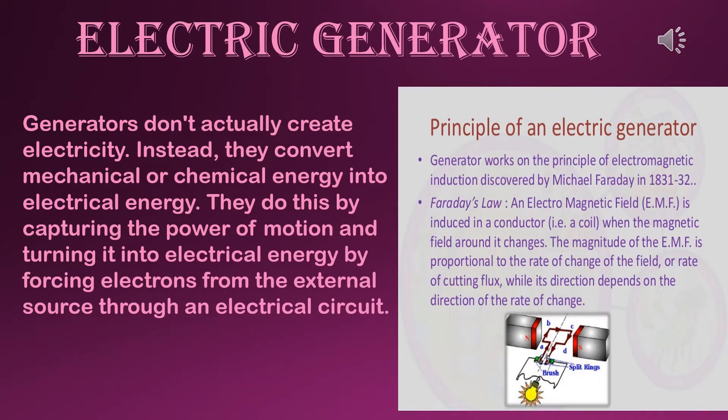First I am starting with electric generator. An electric generator is a device which converts mechanical energy into electrical energy. It works on the principle of electromagnetic induction. There are two types of electric generator: one is AC generator and another one is DC generator.